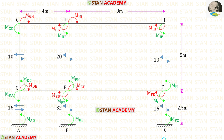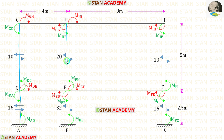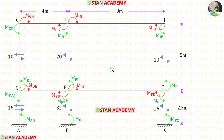Now we are going to find the moments. The moments along the beams will be acting in the clockwise direction, and the moments along the columns will be acting in the anticlockwise direction. Also, the moments at the ends of each member will be the same — for example, in member GH, M_GH and M_HG will be equal; similarly for member GD, M_GD and M_DG will be same.